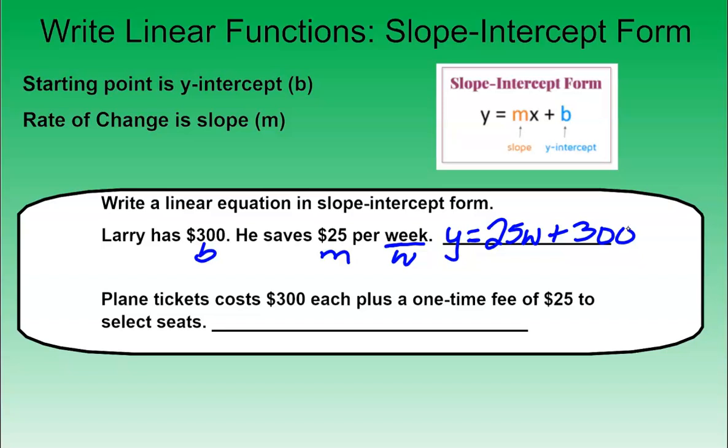So if it said, how many weeks would it take him to get to $500? All I would have to do is solve for w, and I would put my y would be 500. Or if I want to say, how much money would he have after two weeks, I could put two in for w, and 25 times 2 is 50. 50 plus 300 would be 350. So after two weeks, he would have $350.